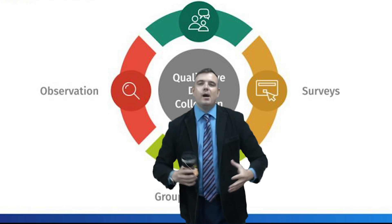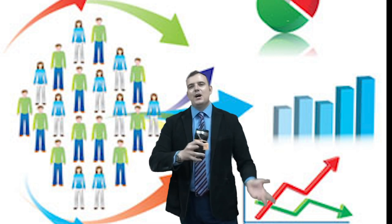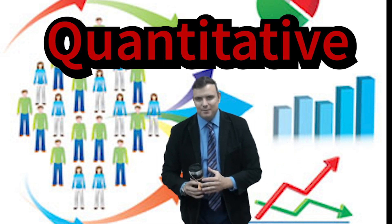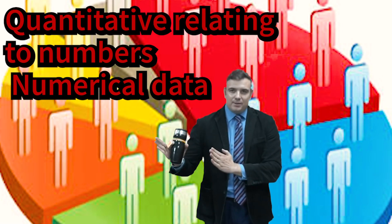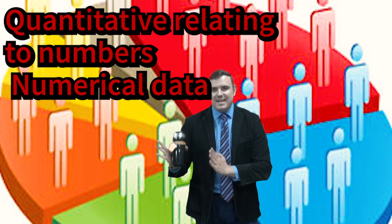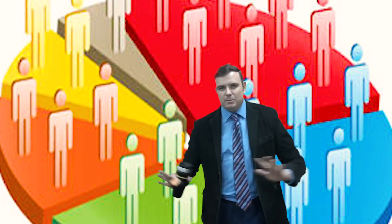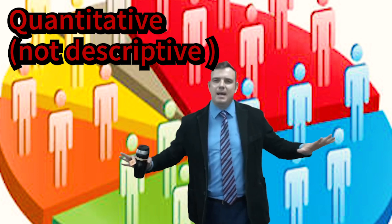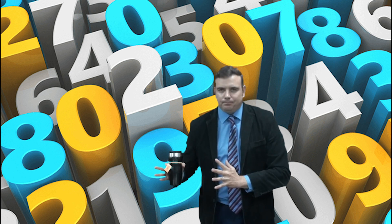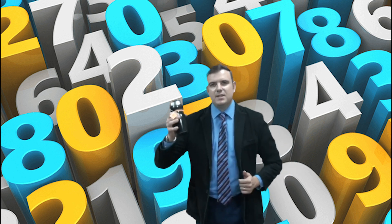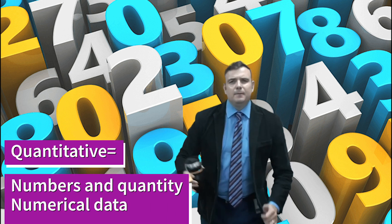On the opposite side we have quantitative. It sounds similar but it's quite different. Quantitative is easy to remember — it's all relating to numbers and numerical data. It's not about description or going into great depth; it's not really digging deep into a topic. Quantitative is all to do with numerical types of data.